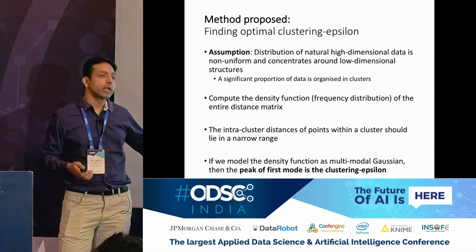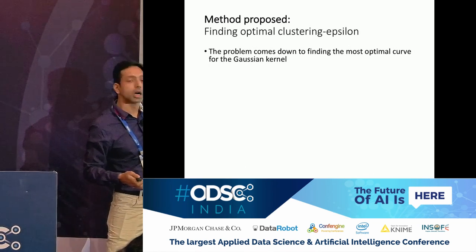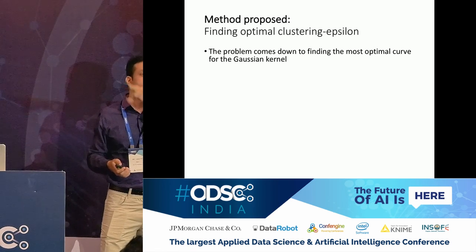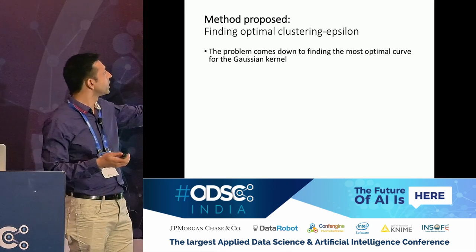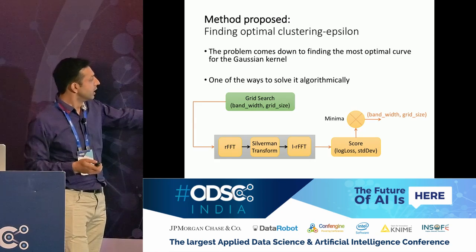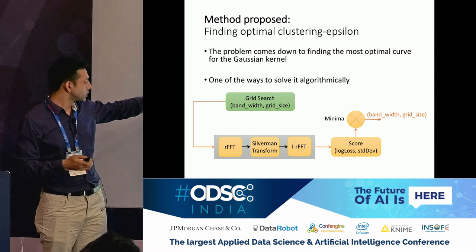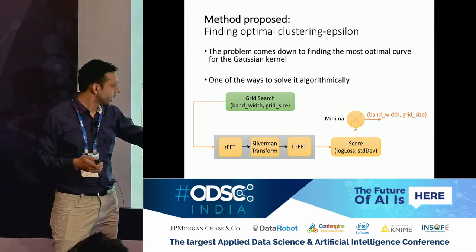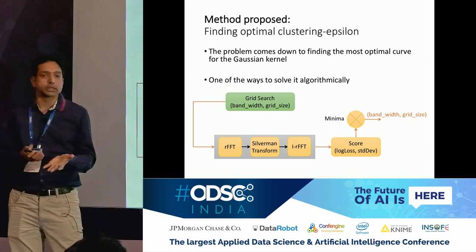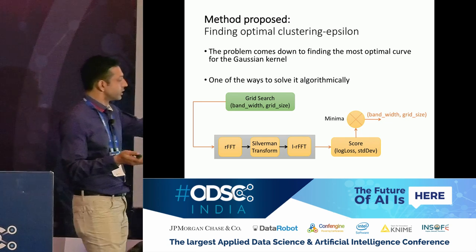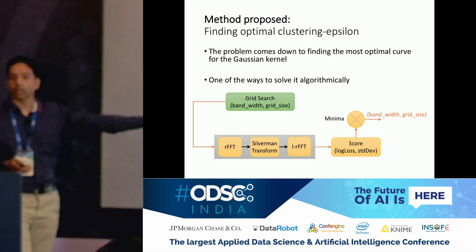But finding the right density curve is not easy — the problem becomes finding the right Gaussian kernel bandwidth. Using a grid search over multiple bandwidth parameters, apply Gaussian kernel density estimation. Take a Fourier transform, invert it, and find the minima by maximizing the probability of the entire curve — using log loss over the distribution. The optimal bandwidth from the grid search gives the right frequency curve. The inter-cluster distance peak of the first mode gives us the clustering epsilon. As simple as that.